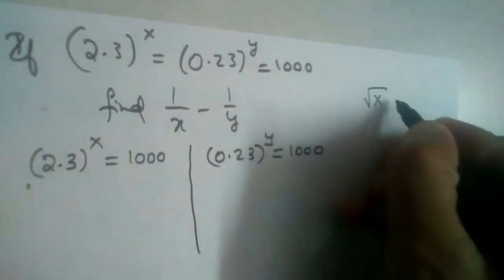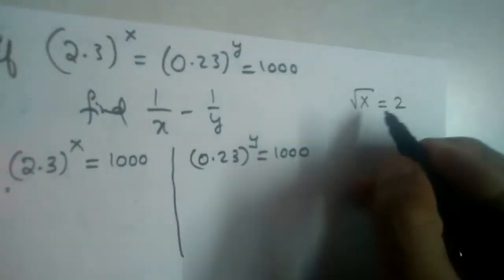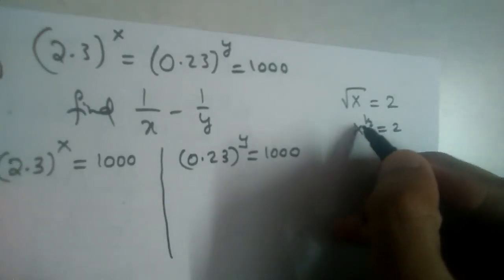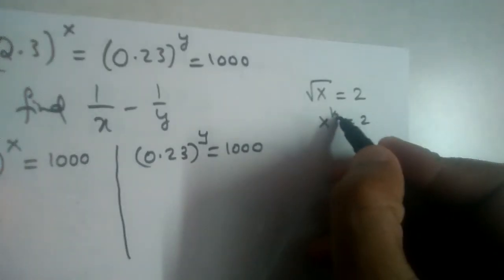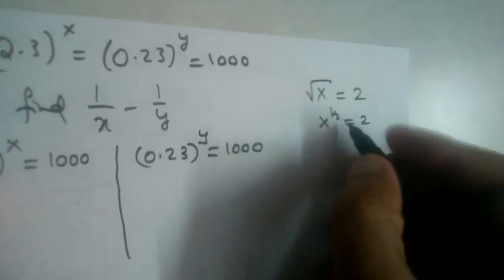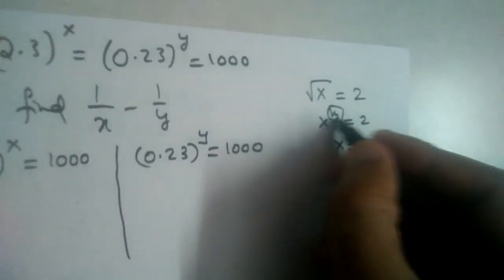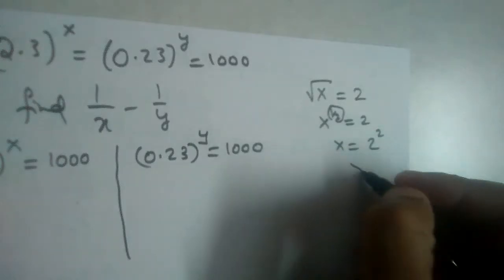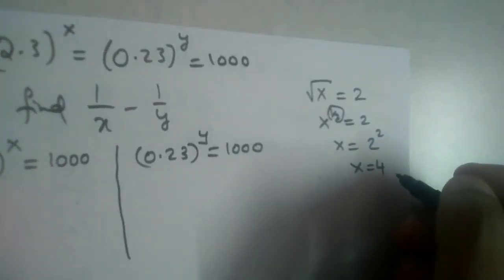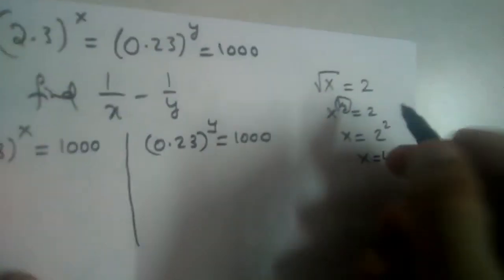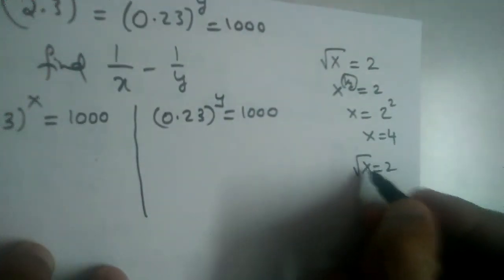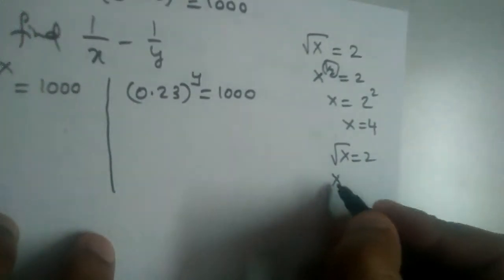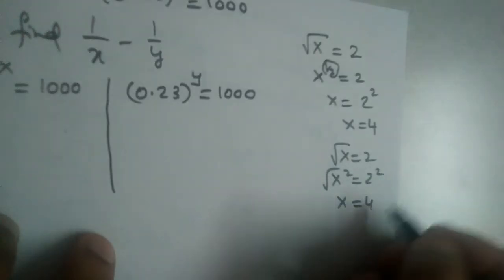To understand the method, consider: if root x equals 2, that is x power 1/2 equals 2, then taking 2 to the other side as reciprocal gives x equals 4, which is the same as squaring both sides. So when a power goes to the other side, it becomes its reciprocal.